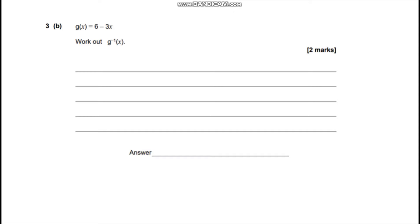In this video we're going to be looking at question 3b from the 2022 Further Maths GCSE paper 1. It's given us a function g(x) equals 6 take away 3x and it's asked us to find the inverse function.